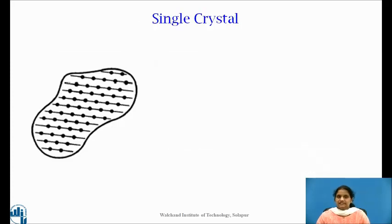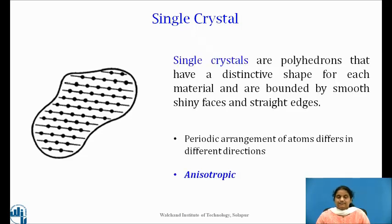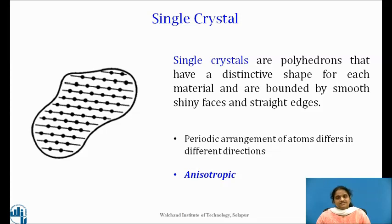Single crystals are defined as polyhedrons that have a distinctive shape for each material and are bounded by smooth, shiny faces and straight edges. When a crystal is broken, it cleaves along certain preferred directions, as we can see in the figure. Since the periodic arrangement of atoms differs in different directions, the physical properties vary with direction, so they are called anisotropic crystals.